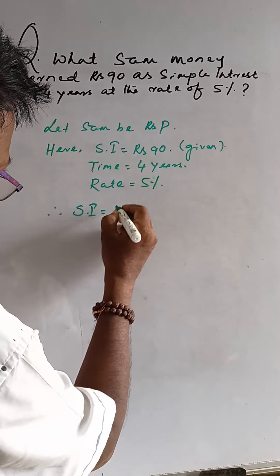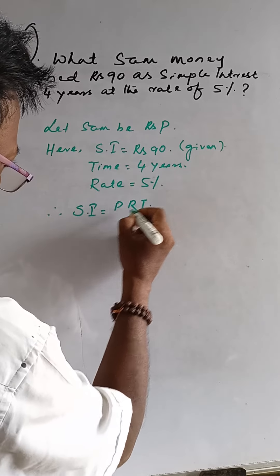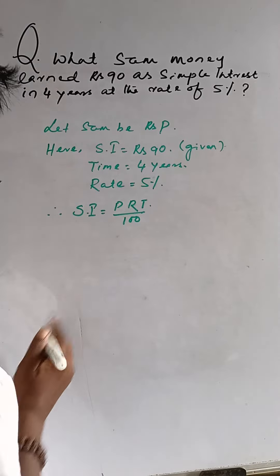simple interest is equal to P R T by 100—principal, rate, time by 100.